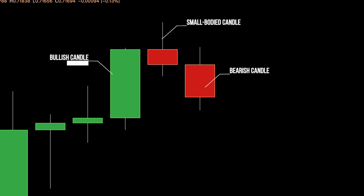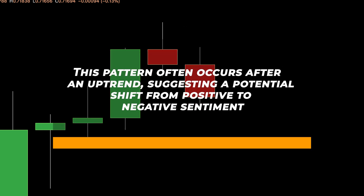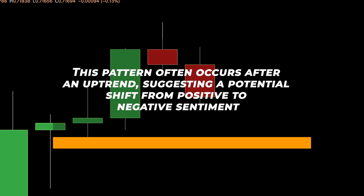The evening star can be seen as a signal of uncertainty or a possible change in the market's mood. It consists of three candles: a bullish candle, followed by a small-bodied candle indicating indecision, and finally a bearish candle that completely engulfs the bullish one. This pattern often occurs after an uptrend, suggesting a potential shift from positive to negative sentiment, reflecting a battle between buyers and sellers and potentially signifying a forthcoming price decline.